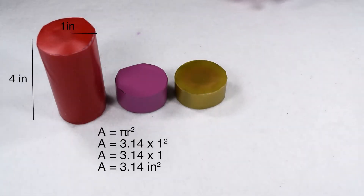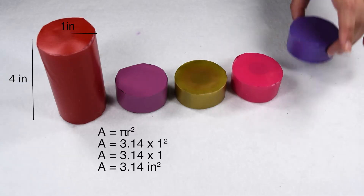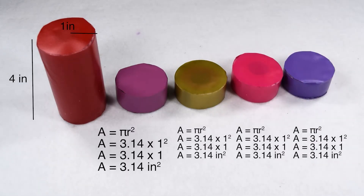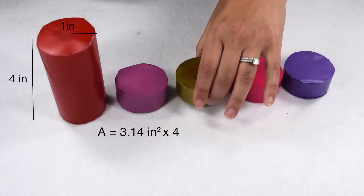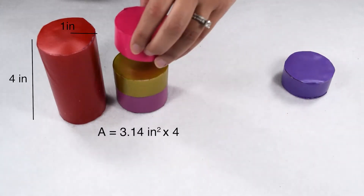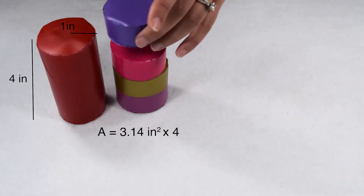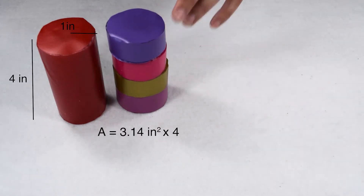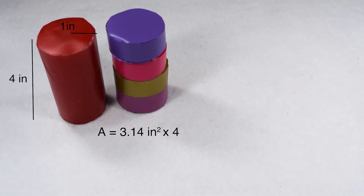That means we would then need 4 layers. Each one of these layers would also have an area of 3.14 square inches. To find our total volume, we would need to take 3.14 square inches per layer and multiply it by 4 layers. So that gives us a total volume of 12 and 56 hundredths cubic inches.